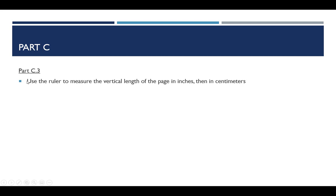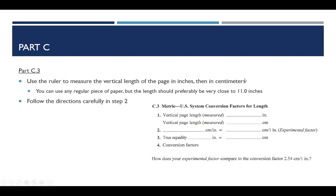So with part C3, you're going to use your ruler to measure the vertical length of a page in inches then in centimeters. So vertical length, you know, up and down on the page. Now, it tells you to use the page in the lab manual, but you could really use any regular piece of paper. But you want the length to be very close to 11 inches, which is what a standard piece of paper would have as its height.